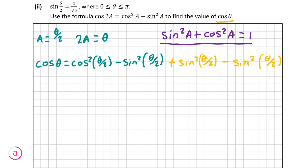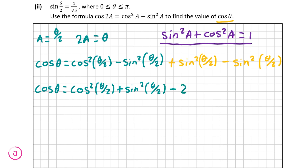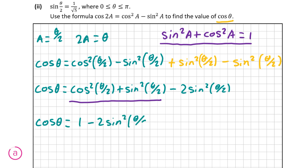Since I'm adding and subtracting the exact same term, I'm not affecting the equation. But now I can rewrite the right hand side as cosine squared theta over 2 plus sine squared theta over 2, minus 2 times sine squared theta over 2. We can apply our identity sine squared a plus cosine squared a equals 1, substituting 1 in, leaving us with cosine theta equals 1 minus 2 sine squared of theta over 2.